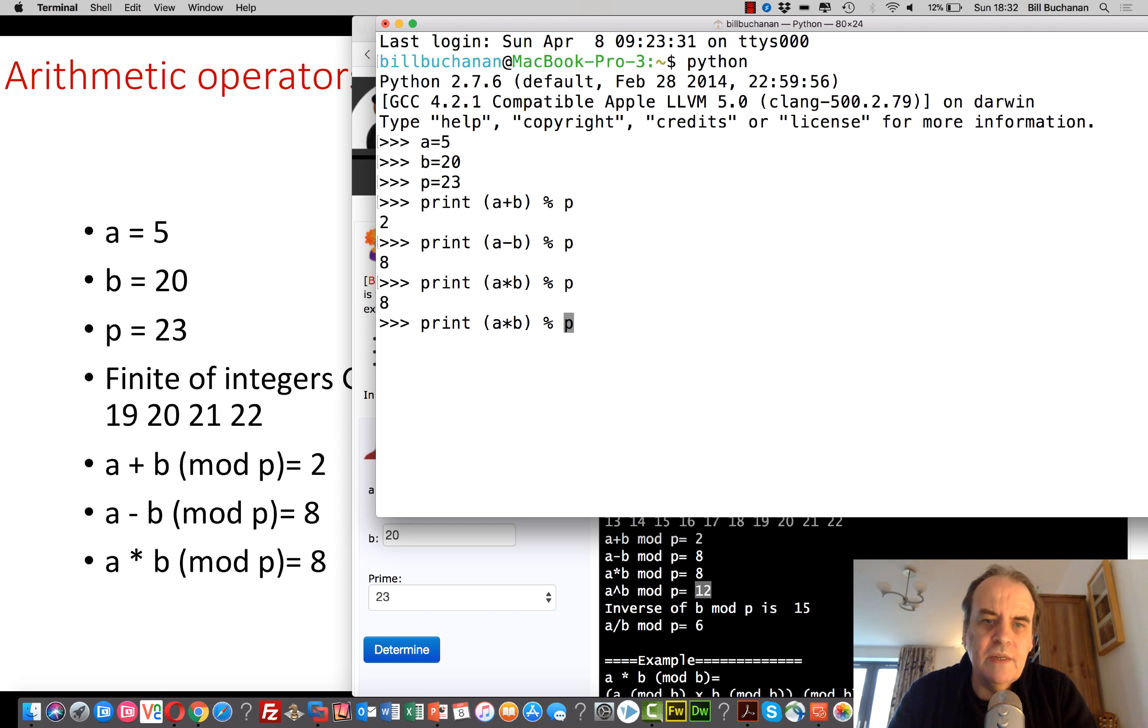We'll end up with 8 and then we'll do a multiplication. We'll also end up with 8 and we'll do to the power of, in Python to the power of is that. So we end up with that.